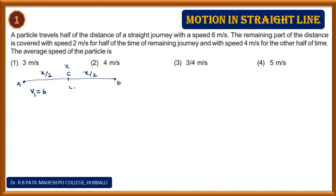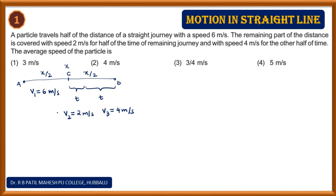In the next segment from C to B, the time interval is equal but speeds are different, so distance covered might not be the same. The velocity v2 = 2 m/s for the first half time, and v3 = 4 m/s for the remaining half time.